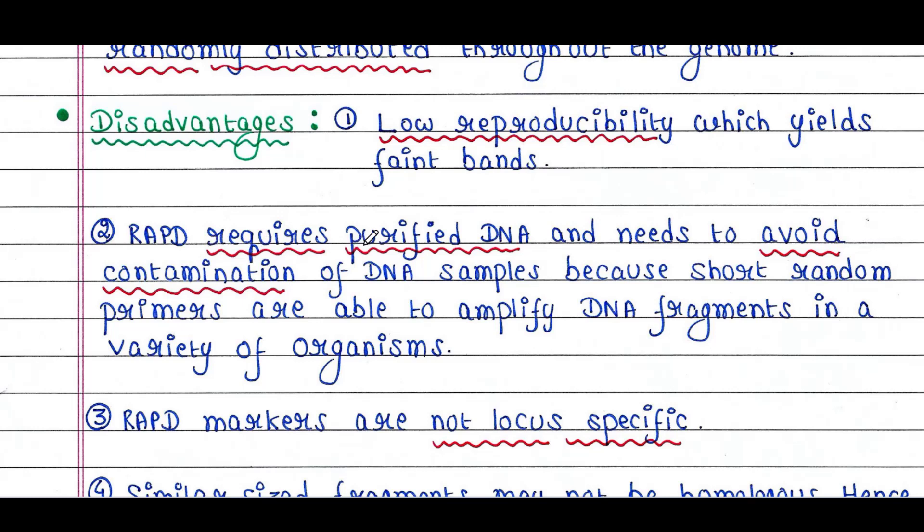RAPD requires purified DNA and needs to avoid contamination of DNA samples, because short random primers are able to amplify DNA fragments in a variety of organisms. This technique requires highly purified DNA. Since primers are non-specific, they can bind to DNA samples from other organisms too. Suppose your DNA is contaminated by bacteria, then primers will bind to the bacterial DNA too, and you will get a mixture of amplified products from both organisms.